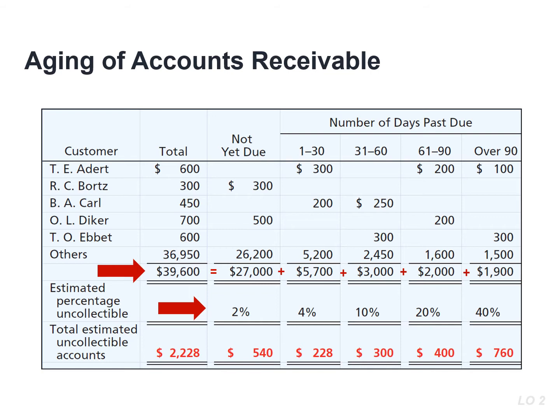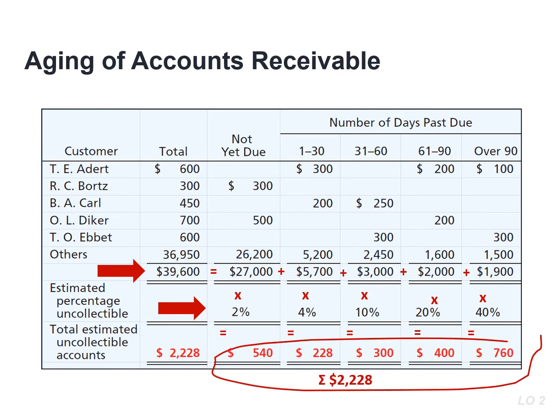The longer a receivable is past due, the less likely it is to be collected. As a result, the rate increases as the number of days past due increases. Note the rates — they range from 2 to 40%. To determine the estimated uncollectible amounts, multiply the totals of each category by the bad debt loss rate. Total estimated uncollectible accounts for this company is $2,228.